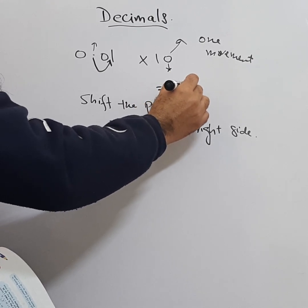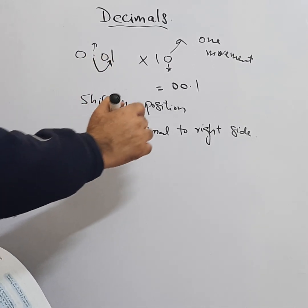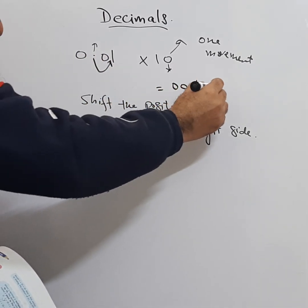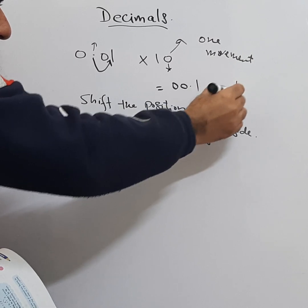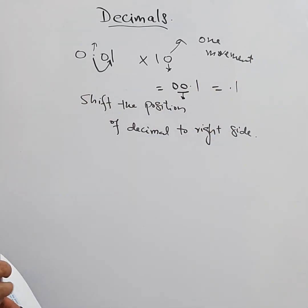0.1 equals 0.1. There is no value of zeros on the left side of a decimal. So this is how the multiplication works.